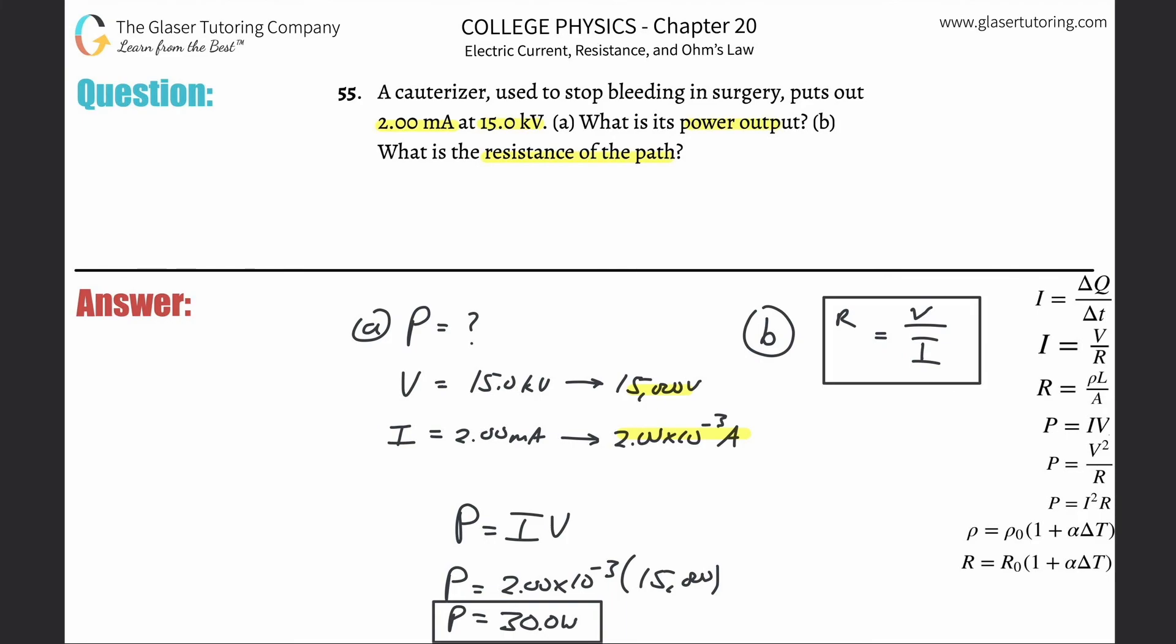What I notice is that I'm given these values in the problem, right, the 15 kilo and the 2 milli. So I'm less likely to make an error. If I use my power, what happens if I screwed this up? Well, then if I use one of the power formulas to find the resistance, I'm going to screw up the resistance.